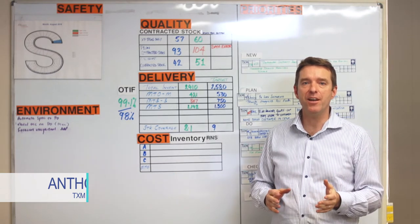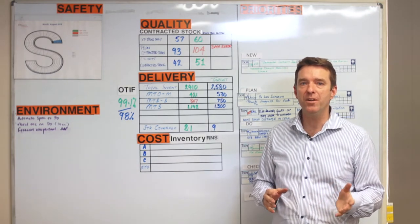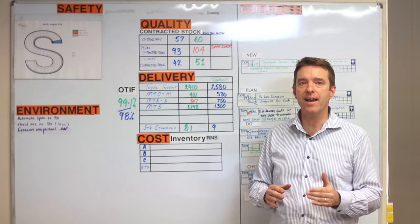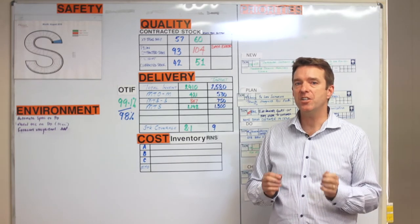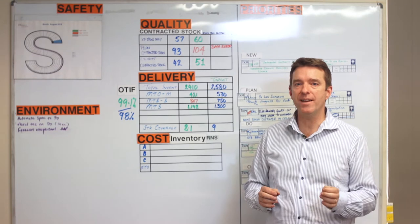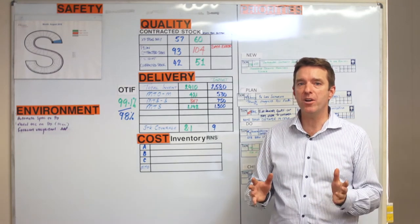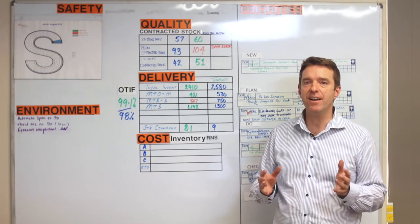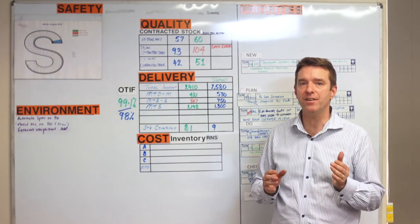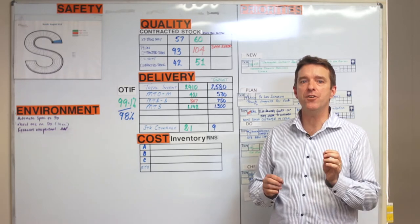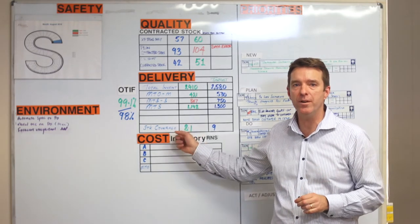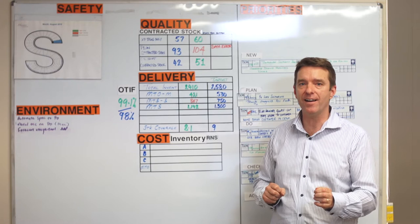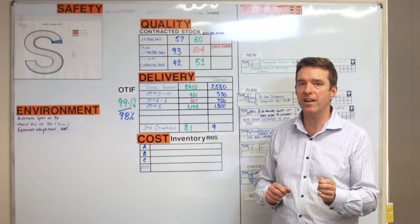This Lean Minute helps set up a visual management board that can facilitate a lean daily stand-up meeting. The challenge is to provide a workplace meeting team with the framework to have critical discussions. At TXM, we have established the lean daily leadership process to help leaders set up daily meetings that use the visual management board to standardize the agenda and in turn the conversation.